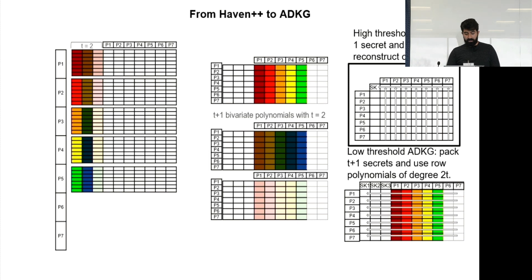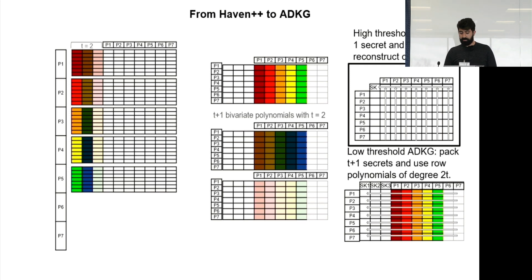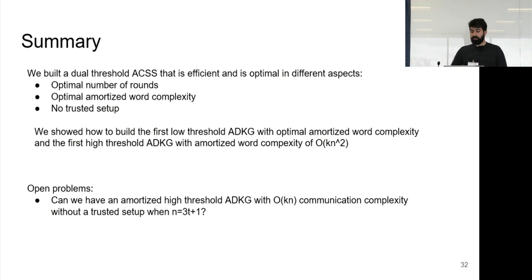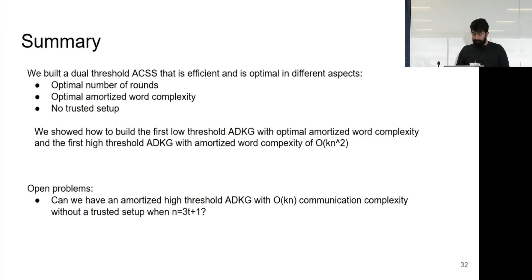Public keys can be easily generated because we have consensus over the column polynomial commitments, so every party can send a public key and prove it is consistent with a specific polynomial commitment. In summary, we built a dual threshold ACSS that is efficient and optimal: optimal number of rounds, optimal amortized word complexity, no trusted setup. We showed how to build the first low threshold ADKG with optimal amortized word complexity and the first high threshold ADKG with O(KN²). Open problem: Can we achieve an amortized high threshold ADKG with O(KN) communication complexity without trusted setup when N = 3T+1?